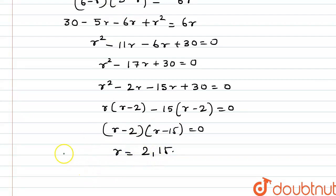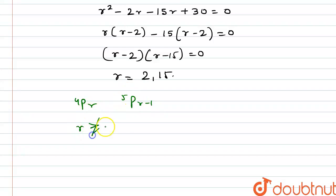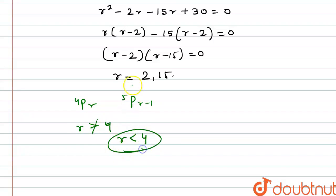But here in the question, we were given 4Pr and 5Pr minus 1. So we can clearly see that r should not be greater than 4. So we only have one value that is less than 4, and therefore the value of r is equal to 2. So this will be our final answer. Thank you.